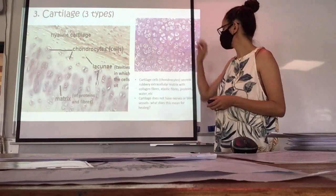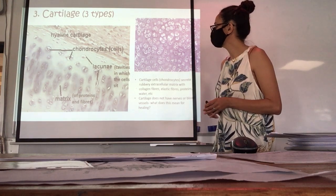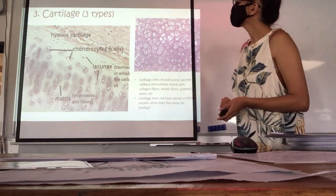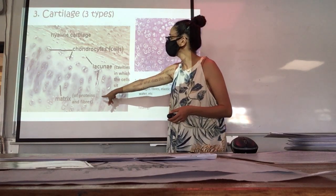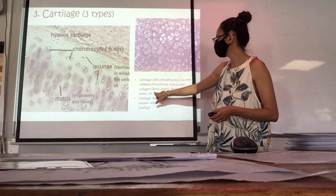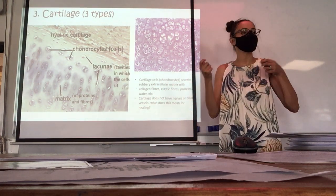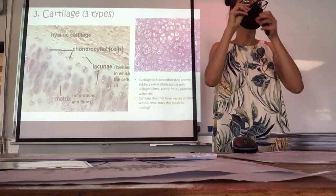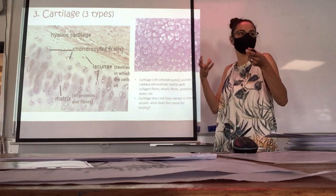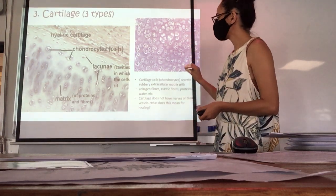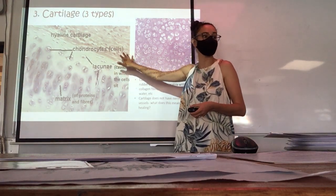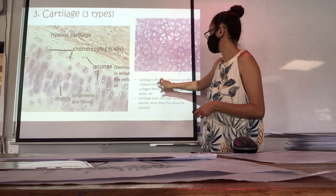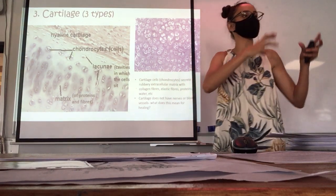Next is cartilage — there are three types. Cartilage would have more collagen than elastic. Chondrocytes are the specific cells of cartilage — they secrete the matrix with collagen fibers, elastic fibers, protein, and water. You can still bend cartilage, like the top of a chicken drumstick, so there are still elastic fibers present, but it is harder than a ligament or tendon. Cartilage cells are called chondrocytes.